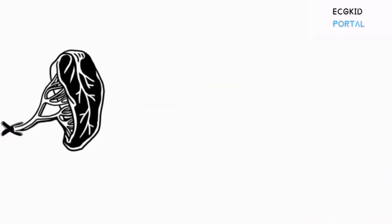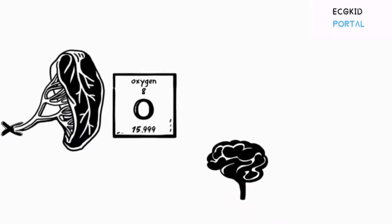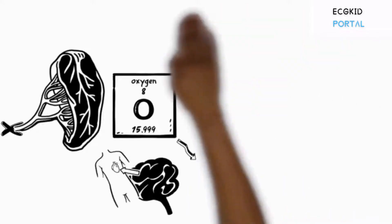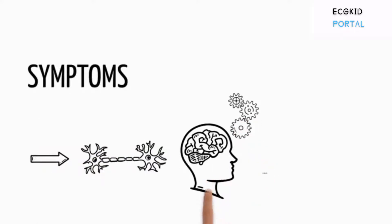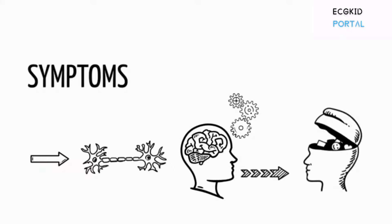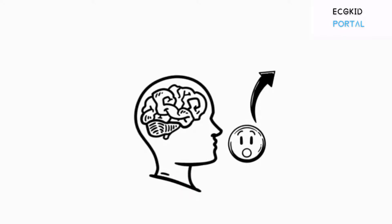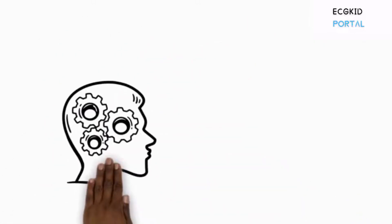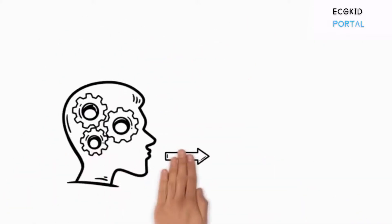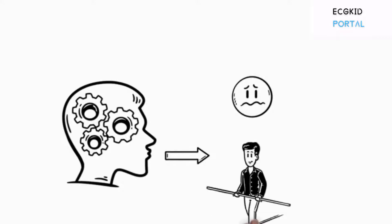Blockage in one of the arteries of the Circle of Willis leads to deprived oxygen supply to that area due to decrease in blood supply. This causes the brain cells in those areas to die. The symptoms are related to the function of the region in our brain that gets impacted during stroke. For example, when the speech center in the brain gets affected, there will be irrelevant speech or slurred words. Or if the cognitive areas get affected, there will be disorientation and loss of balance.